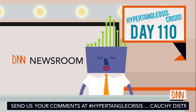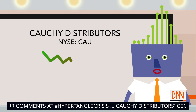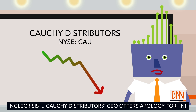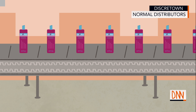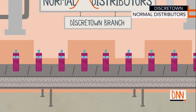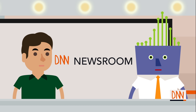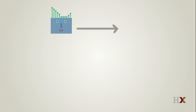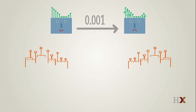We're back, live, on day 110 of our coverage of the hypertangulosis crisis. Cauchy distributors' stock price has plummeted in the last week as it has become clear that their quality control is far inferior to their competitor. In other news, normal distributors has just released a new formula of the conditioner that patients can apply at home instead of at a clinic with limited capacity. Professor Blitzstein is here to help us predict the ramifications. Hypertangulosis is rarer than you may think, possibly because the media have been covering this 24 hours a day. It would be much better to obtain good data on how many cases there are as a function of time. According to preliminary estimates, the probability of coming down with hypertangulosis tomorrow for someone whose hair is currently fine is only 0.001. The number of people in Discreetown with healthy hair is currently about 20,000, so we can expect about 20 new cases tomorrow.